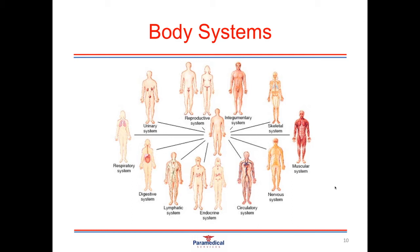The nervous system consists of our brain, spinal cord, and all the nerves running in and out of that. The nervous system is one of the main messenger systems in the body, along with the endocrine system, and it's important for sending signals and information from the body to the brain and back again. The circulatory system consists of the heart, the blood vessels, and the blood. It's important for transporting blood, oxygen, nutrients, hormones, and waste products around the body.